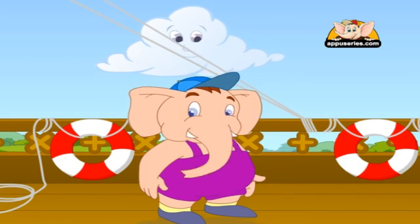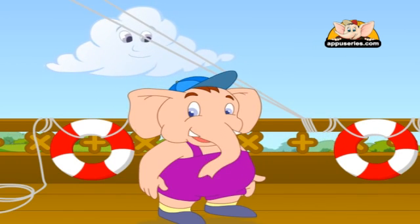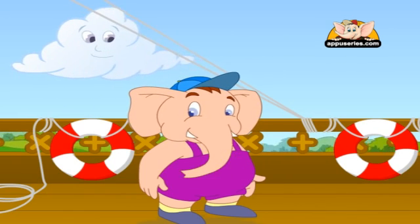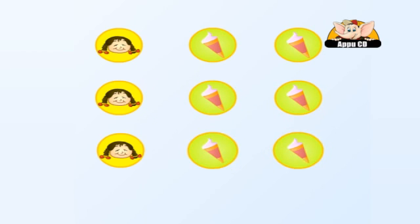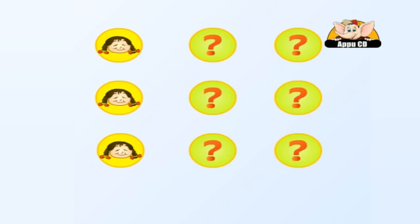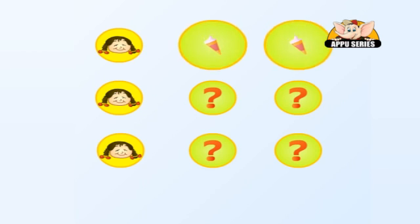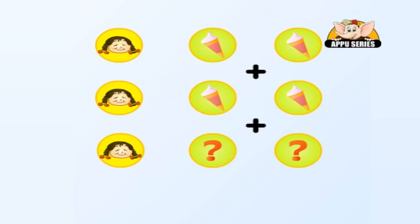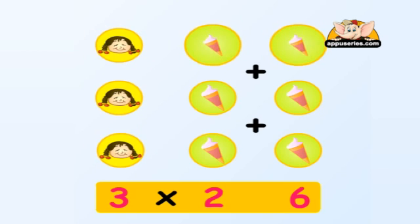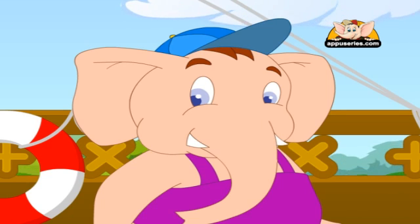Let's take 2 multiplied by 3, which means we need to add the number 2, 3 times. Let's say there were 3 girls who wanted to eat 2 ice creams each, but they did not know how many to buy in total. We can solve this problem with multiplication. So one girl wants 2 ice creams and there are 3 girls in total — so how many ice creams do we want in all? 2 plus 2 plus 2, which is 6. We can also say 3 multiplied by 2 equals 6. You see how multiplication is like repeated addition?